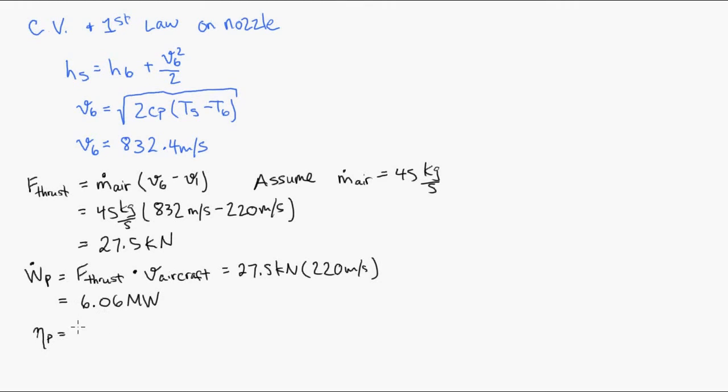The propulsive efficiency is the propulsive power divided by the heat input. So we have about 6,000 kilowatts divided by Qin. And we have to include the mass flow rate in the denominator. So we get the propulsive efficiency of about 17.7% for the cycle.